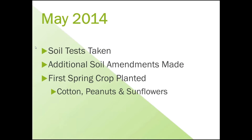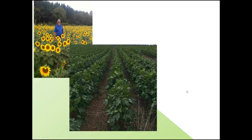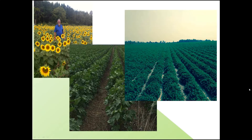At May 2014, new soil tests were taken. We had sufficient fertility in the pine timber areas and were able to go ahead and plant. We took our spring crop in the ground and began. That first year, we had a combination of peanuts planted in some of the timber areas — they do pretty well in low pH soil — along with cotton and sunflowers.